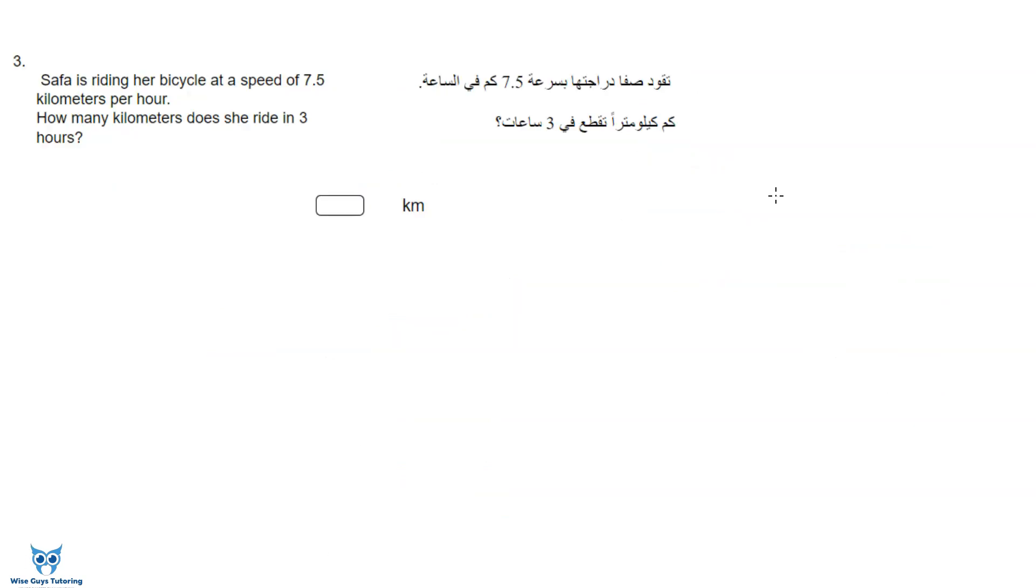Safa is riding her bicycle at a speed of 7.5 kilometers per hour. How many kilometers does she ride in three hours?